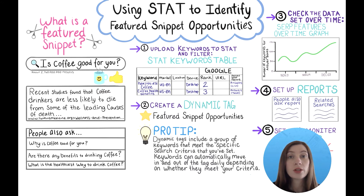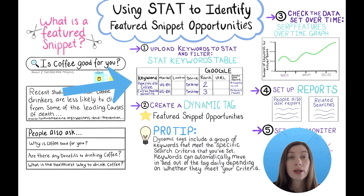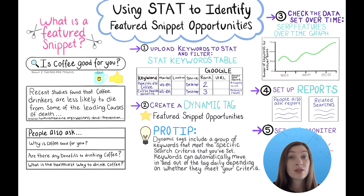Ideally, you want to find keywords that you rank on page one for that also have a featured snippet. STAT's keywords tab is a great place to start with this. In this feature, you can upload a bunch of keywords and once you've allowed some time to gather that data, you can really dig into what keywords you have that are triggering answer boxes and what opportunities there are.